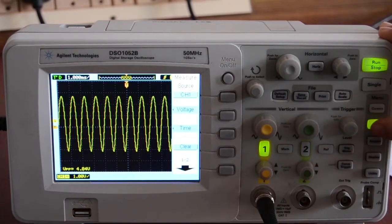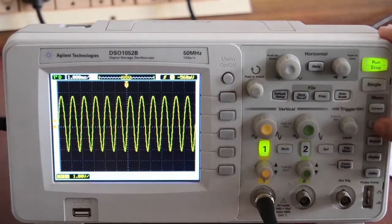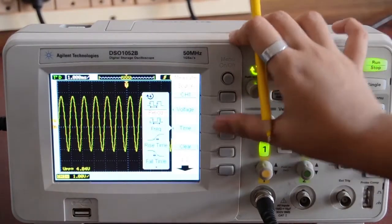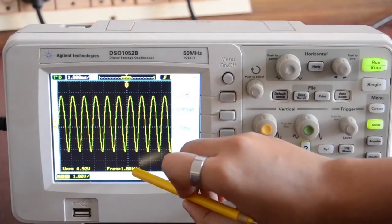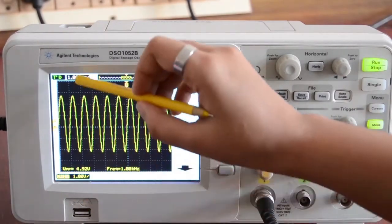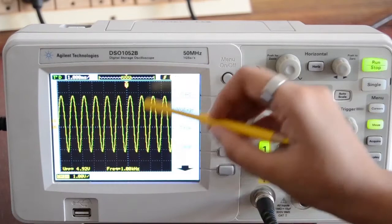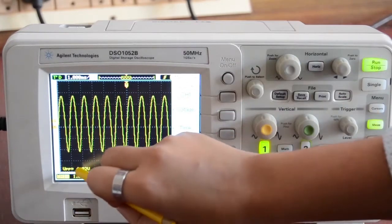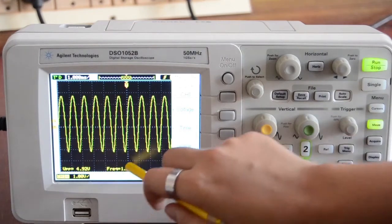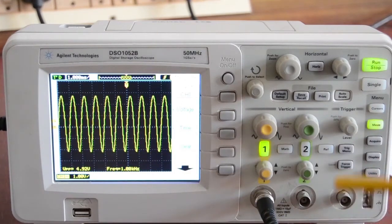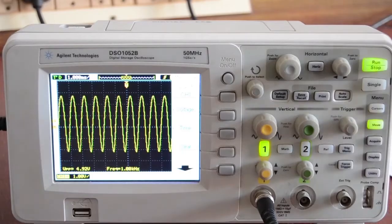Now, let's check the frequency. A frequency of 1kHz is obtained. So we have obtained a sine wave of voltage approximately 5V and frequency 1kHz. From this, we can infer that the voltage gain is 100, as we have designed.